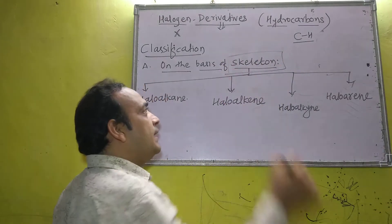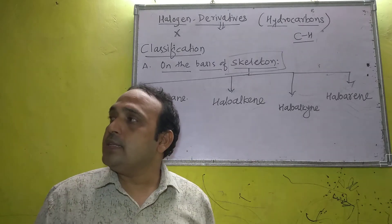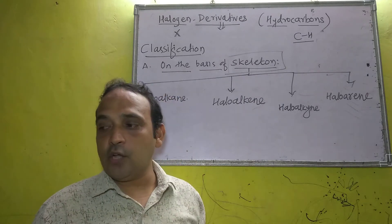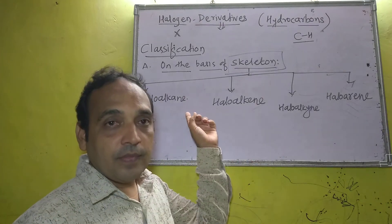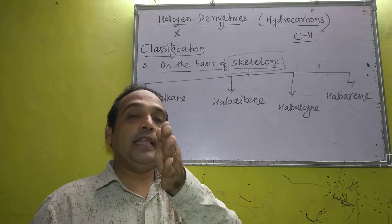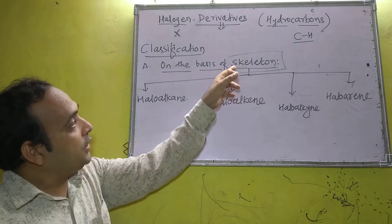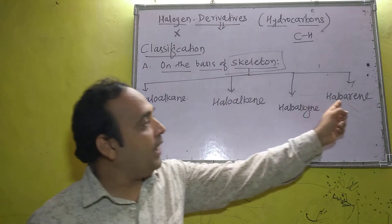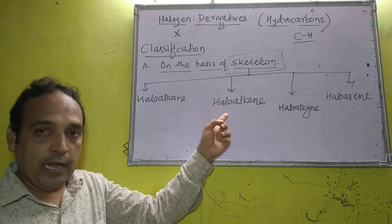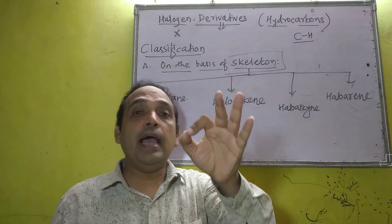Skeleton means the structure — or we can say, from which hydrocarbon the compound is obtained: whether from alkane, alkene, alkyne, or aromatic compounds. On the basis of skeleton, there are four types of halogen derivatives: haloalkane, haloalkene, haloalkyne, and haloarene.